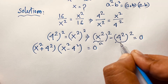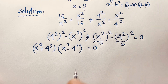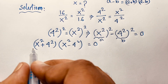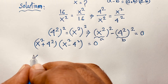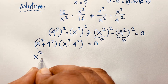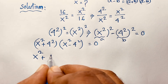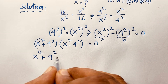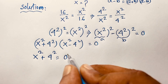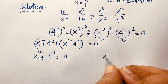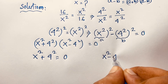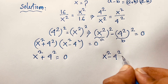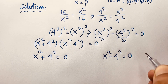So we find two cases. Case one: x squared plus 4 squared equals 0. Case two: x squared minus 4 squared is equal to 0.